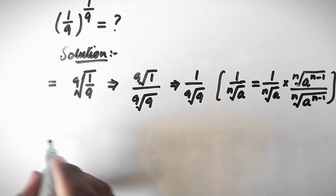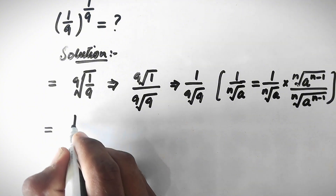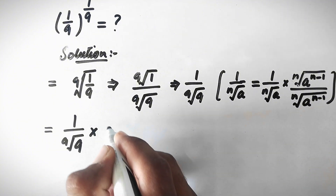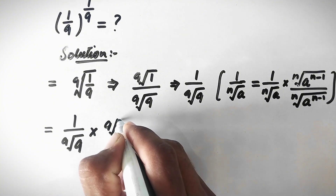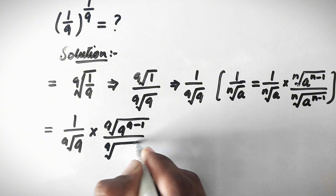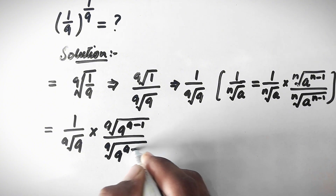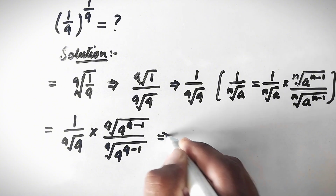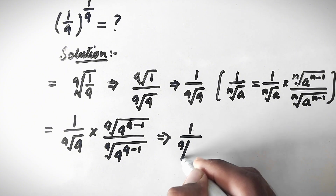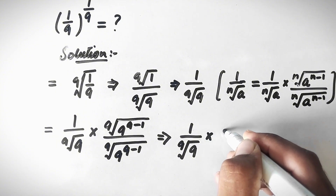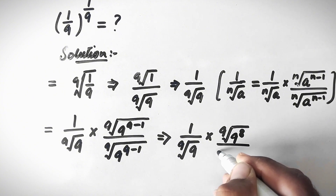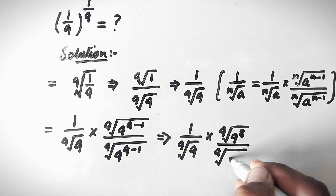Following this property, we write 1 over the 9th root of 9 as: 1 over the 9th root of 9 to the power (n minus 1), divided by the 9th root of 9 to the power (n minus 1).